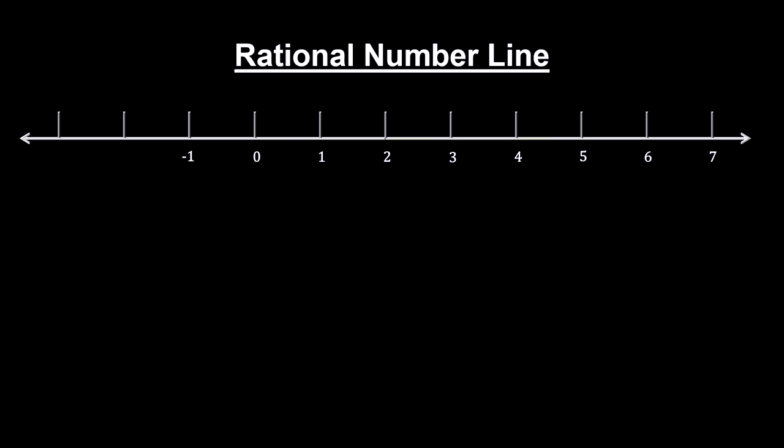Before we leave the number line, there are two more considerations we need to examine. One, there are missing points on the rational number line. And two, the number zero has some unique and relevant characteristics.